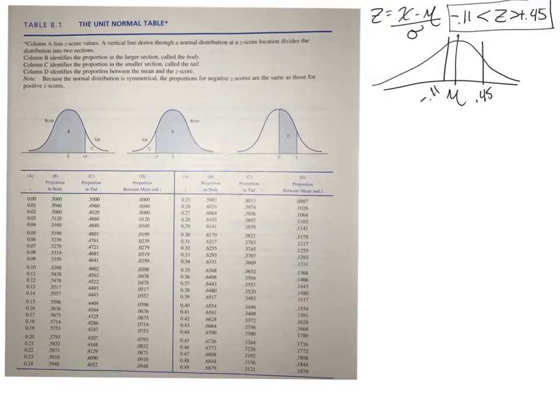In this video, we're going to find the probability of randomly selecting a score between a z-score of negative 0.11 and a z-score of positive 0.45.